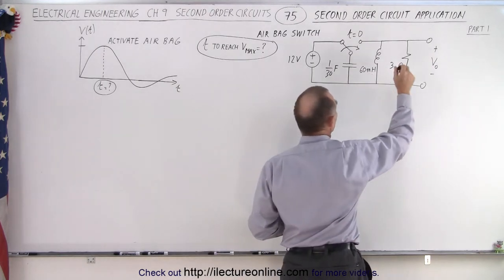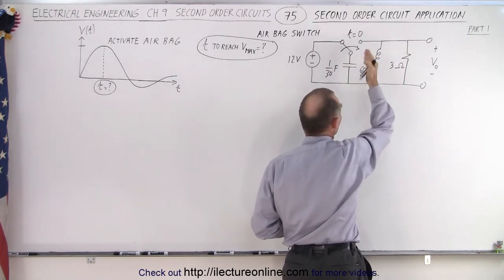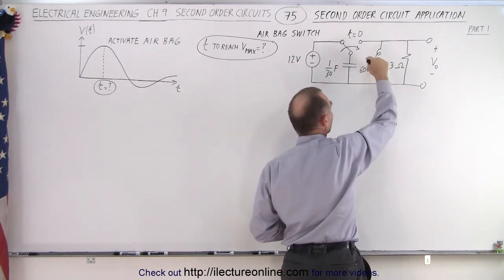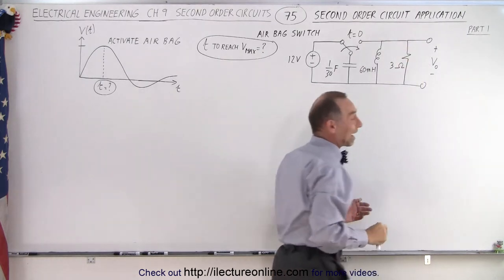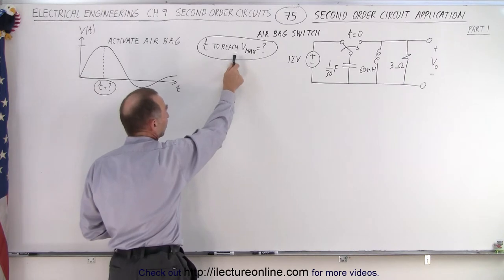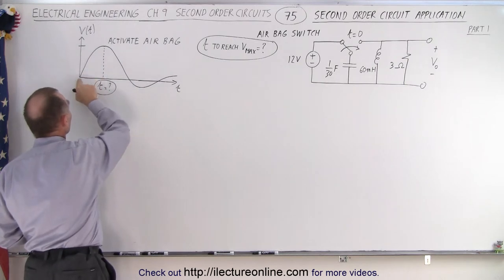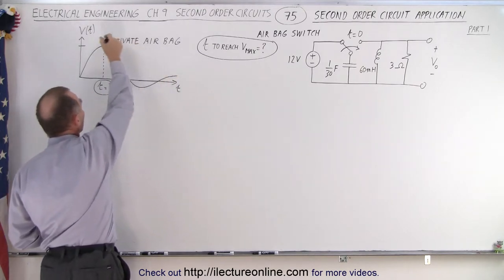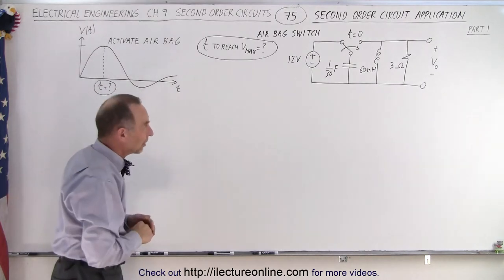Initially there will be no voltage drop across the resistor because there will be no current going through the resistor as the switch closes, and also initially there will be no current going through the inductor. But slowly current will flow through the inductor and through the resistor, and the voltage across the resistor will increase and reach some maximum value fairly quickly. The idea is that we want to find the time at which the voltage across the resistor reaches its maximum value — the airbag is activated at that point.